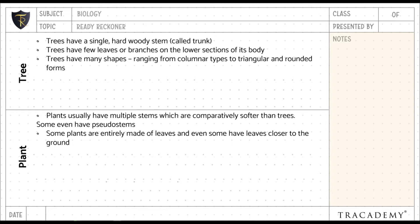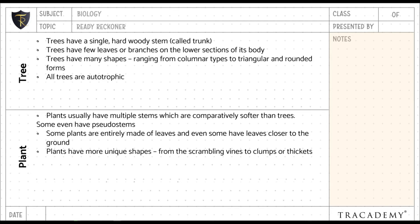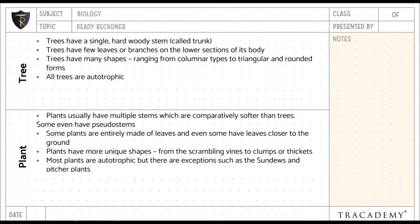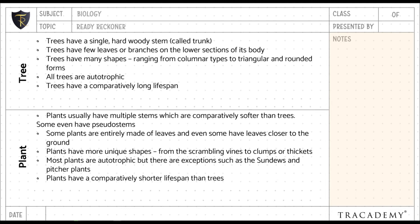Plants have more unique shapes, from scrambling vines to clumps or thickets. All trees are autotrophic. Most plants are also autotrophic, but there are exceptions such as the sundews and pitcher plants.